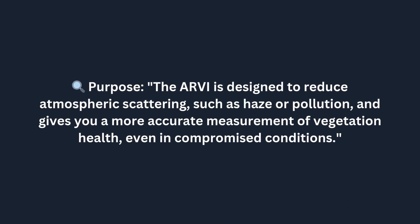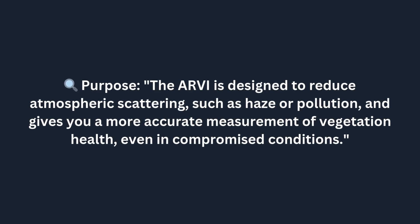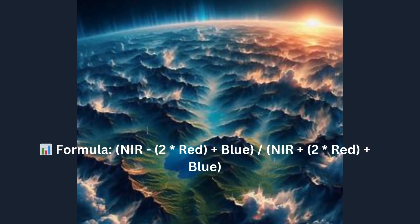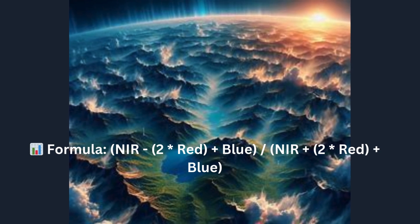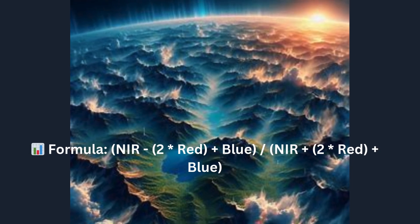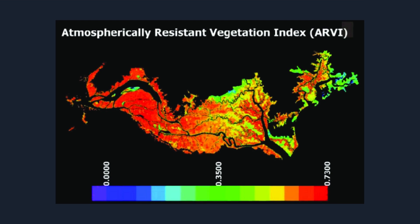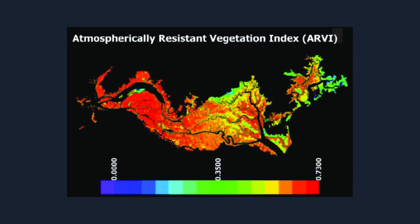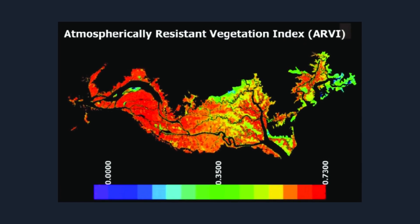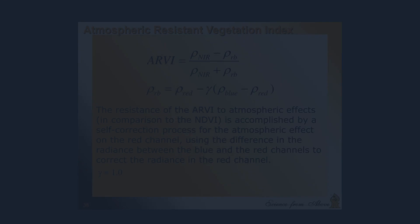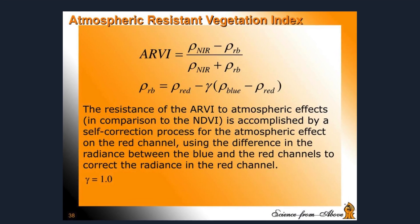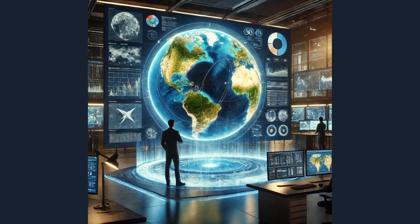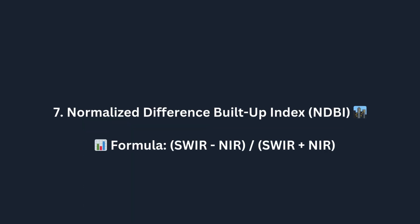Next up is an index that accounts for atmospheric conditions, especially in hazy or polluted environments. The sixth index is the Atmospherically Resistant Vegetation Index, or ARVI. The formula is: ARVI = (NIR − (2 × Red − Blue)) / (NIR + (2 × Red − Blue)). ARVI is designed to reduce atmospheric scattering such as haze or pollution, giving a more accurate measurement of vegetation health even in compromised conditions. It compensates by using the blue band to correct for aerosol scattering in the atmosphere.